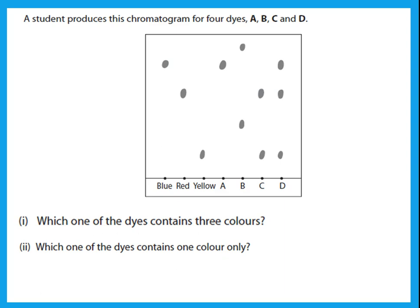A student produces a chromatogram for four dyes A, B, C, and D. Which dye contains three colors? If it contains three colors, it gave three spots — that is dye D. Which dye contains only one color? If it has one color it gave one spot — that is dye A.